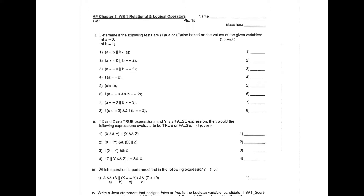So a is less than b is going to be equivalent to 0 less than 1, and b less than a is going to be equivalent to 1 less than 0. Zero is less than 1 is a true statement; 1 is less than 0 is a false statement. So we get true OR false, and true OR false is going to be true — remember, only one of them needs to be true for the whole OR statement to be true.